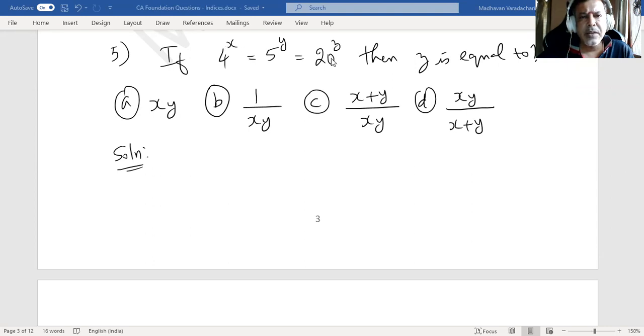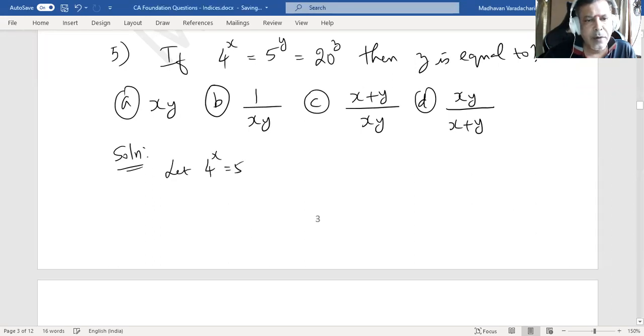Since these three are the same, I can equate this to some constant k. Let 4 to the power of x equal to 5 to the power of y equal to 20 to the power of z, all equated to some constant k.